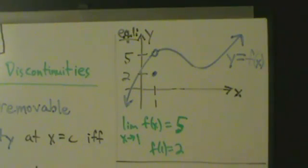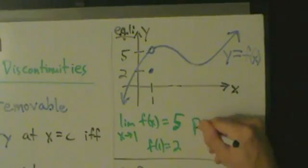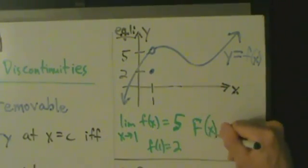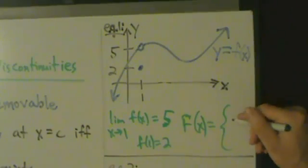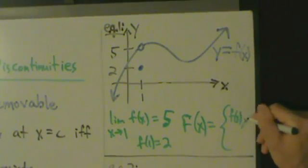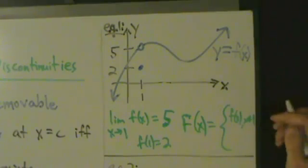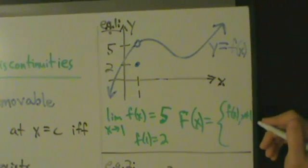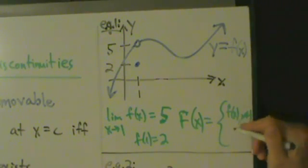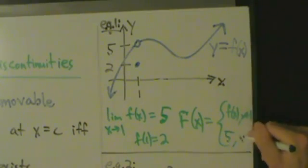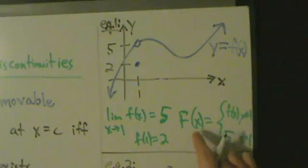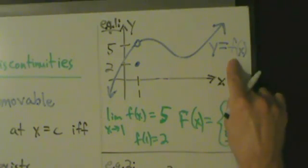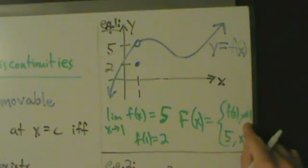And how can it be removed? Well, it can be removed by defining a function big F(x) equals what? Equals little f(x) if x is not equal to 1, and it equals 5 if x equals 1. So big F(x) is going to agree with little f(x) everywhere except x equals 1.